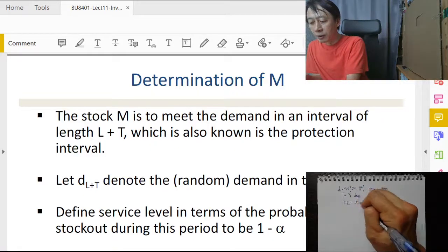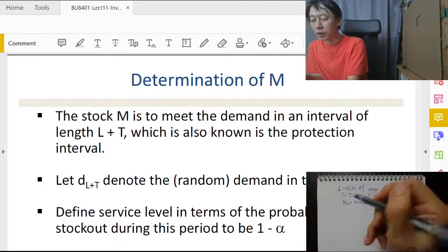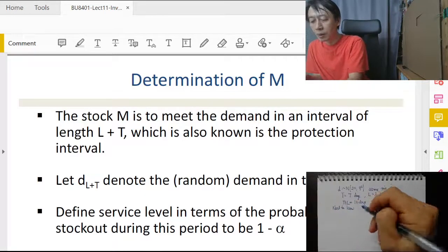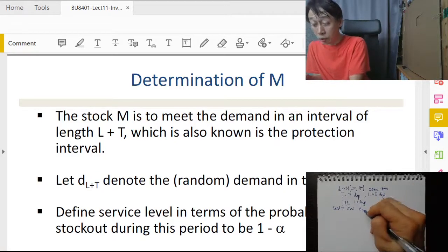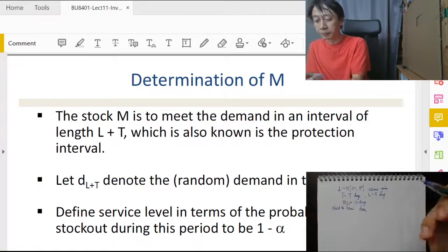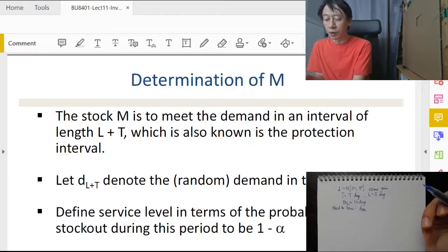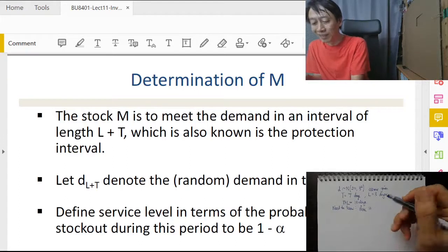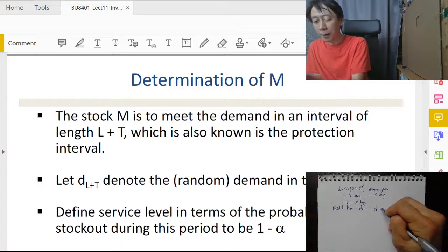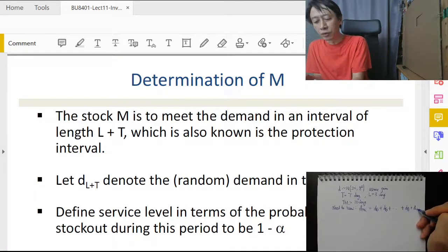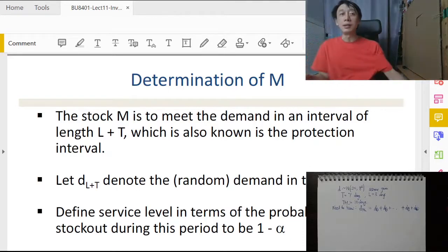We need to know the demand distribution during the protection interval. That is to be calculated from the daily distribution for the first day plus the daily distribution for the second day, and so on, until the daily distribution for the 10th day. This is not to be mistaken as 10 times the daily distribution, because that would mean if a single day distribution is high, then all 10 days are high, which doesn't sound right.